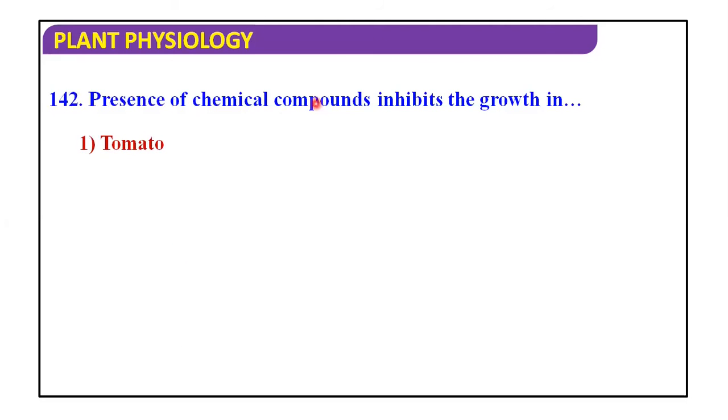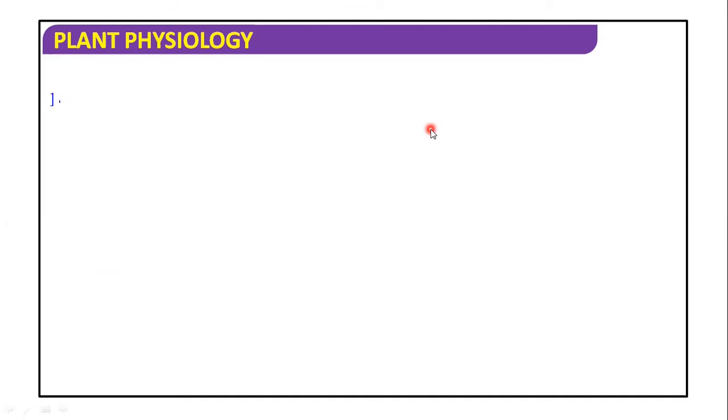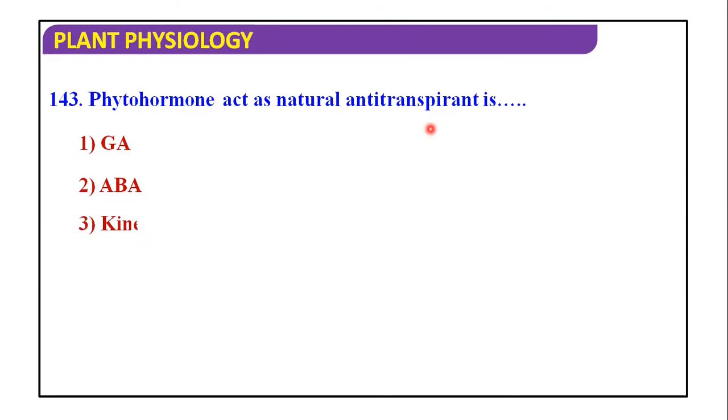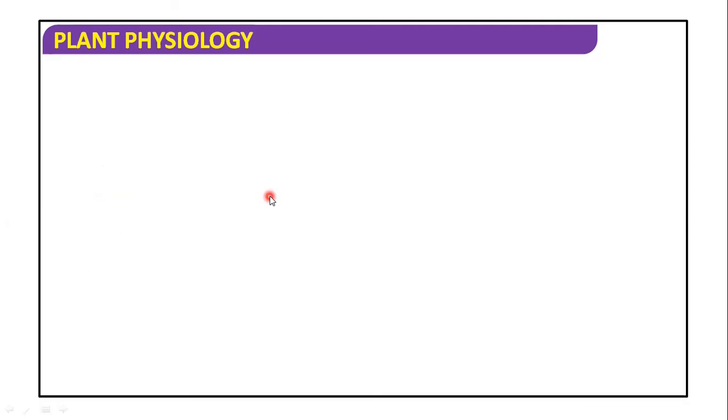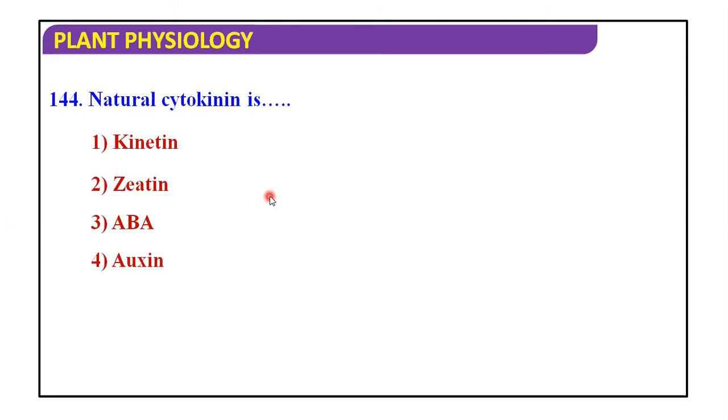Presence of chemical compounds inhibit the growth in tomato, potato, mango, and Polygonum. Answer is tomato. Chemical compounds inhibit the growth, that is the tomato. Phytochrome act as a natural antagonist is gibberellic acid, abscisic acid, kinetin, or ethylene. Answer is abscisic acid. Natural cytokinin is kinetin, zeatin, abscisic acid, auxin, and the answer is zeatin.